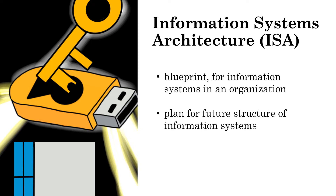What is an Information System Architecture, or ISA? It is one part of an overall information system architecture, which is known as the blueprint for information systems in an organization. It is a conceptual blueprint, or a plan, that expresses the desired future structure for the information system in an organization.